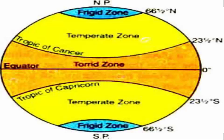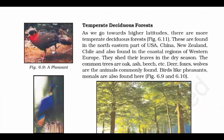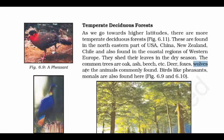Now we have the Temperate Deciduous Forest. It occupies the same temperate region — between the Tropic of Cancer and Arctic Circle in the northern hemisphere, and between the Tropic of Capricorn and Antarctic Circle in the southern hemisphere. The trees shed their leaves in the dry season. Common trees here are oak, ash, and beech. Animals found in these forests include deer, foxes, wolves, and birds like pheasants and monals.